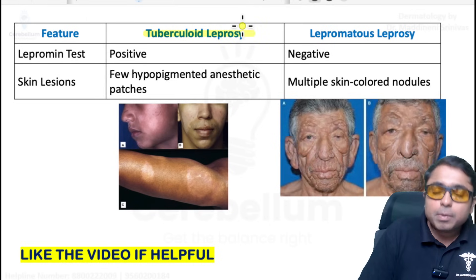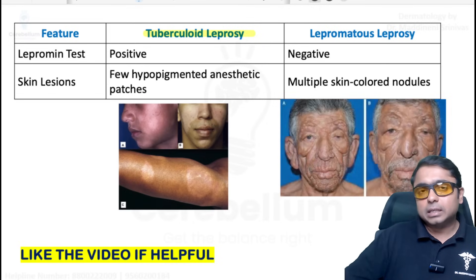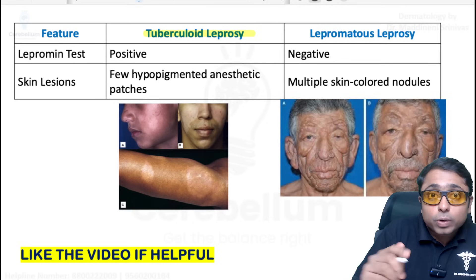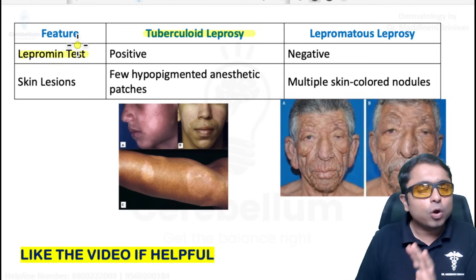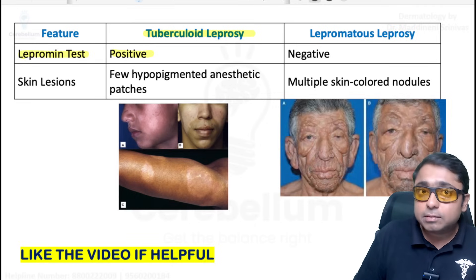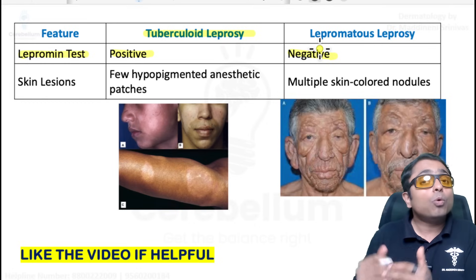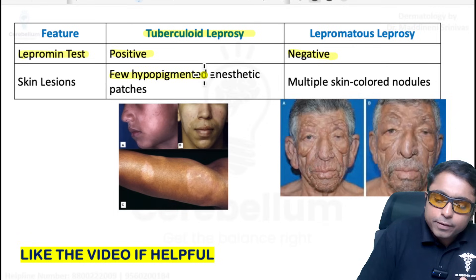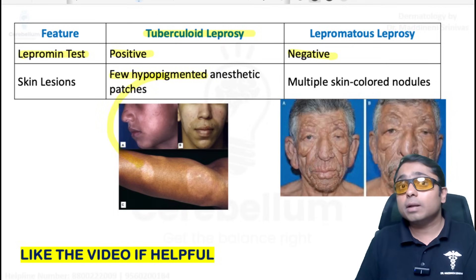Leprosy: the Ridley-Jopling classification divides it into tuberculoid and lepromatous leprosy, with BT, BB, and BL types in between. The lepromin test gives prognosis, not diagnosis. In tuberculoid leprosy, patients have good immunity so the lepromin test is positive. In lepromatous leprosy, immunity is poor, there is more acid-fast bacilli, and the lepromin test is negative. Clinically, few hypopigmented anesthetic patches are seen at the tuberculoid pole.